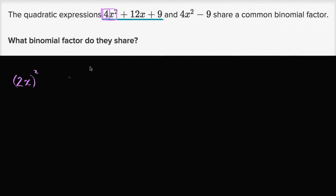Then out here I have a constant term, the 9, that also is a perfect square. I could rewrite that as 3². And you could say, does this fit the pattern of a perfect square polynomial?